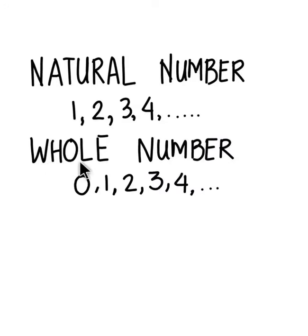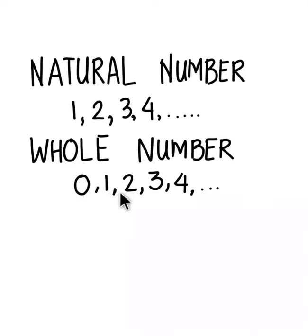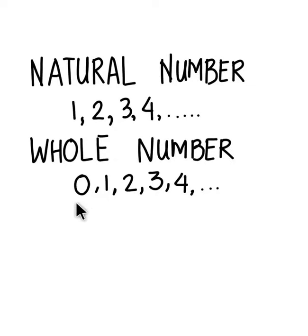Similarly, the whole number has one extra number compared to the natural numbers, that is 0. So whole numbers start from 0, then 1, 2, 3, 4 and move on like natural numbers up till infinity. So the smallest number in the case of whole numbers is 0.